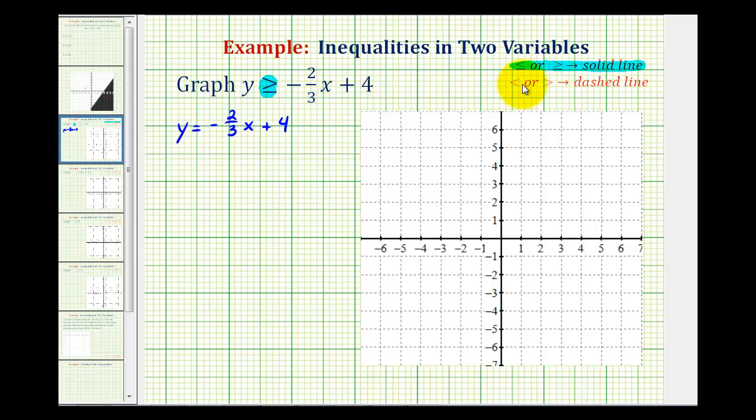But if we have less than or greater than, we'll make a dashed line because the line will not be part of the solution.